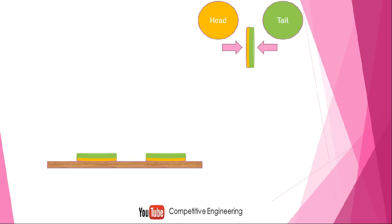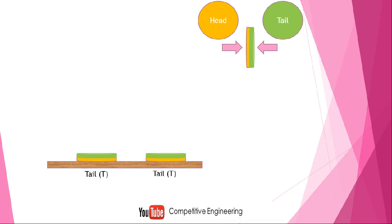Now consider two coins. Orange means head and green means tail. I toss the first coin and get green — that is tail. I toss the second coin and the outcome is tail again, so it is TT — tail tail. There is one more chance: the second coin can come as head, giving the outcome TH. Similarly, the first coin can come as head and the second as tail or head.